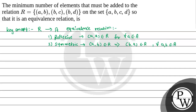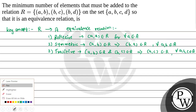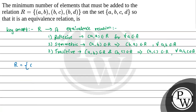Third is the transitive relation: if order pair (a,b) belongs to R and order pair (b,c) belongs to R, that implies order pair (a,c) belongs to R for all a, b, c in A. So here we have the given relation R = {(a,b), (b,c), (b,d)} and the set is {a, b, c, d}.